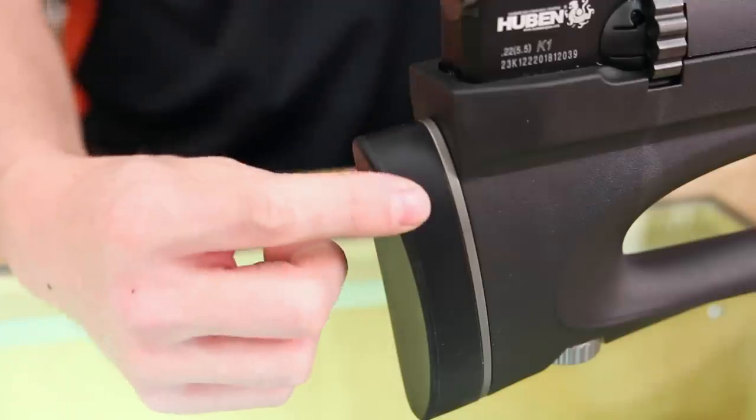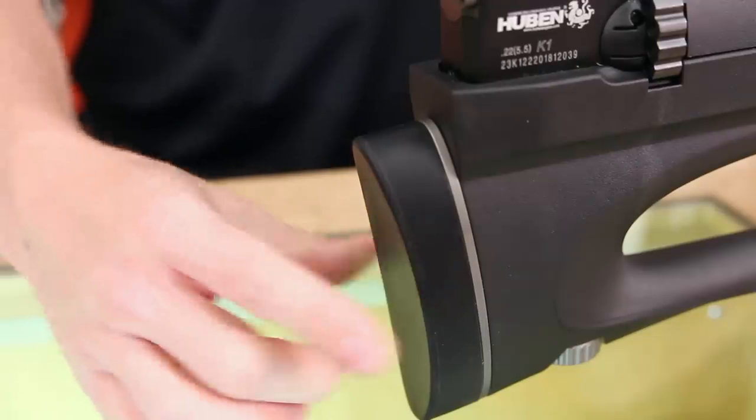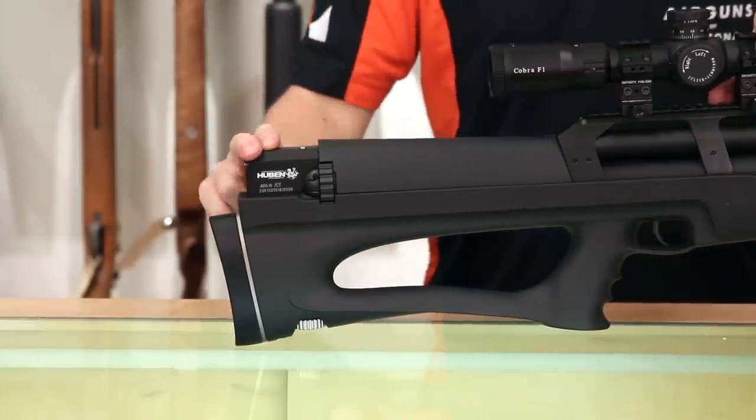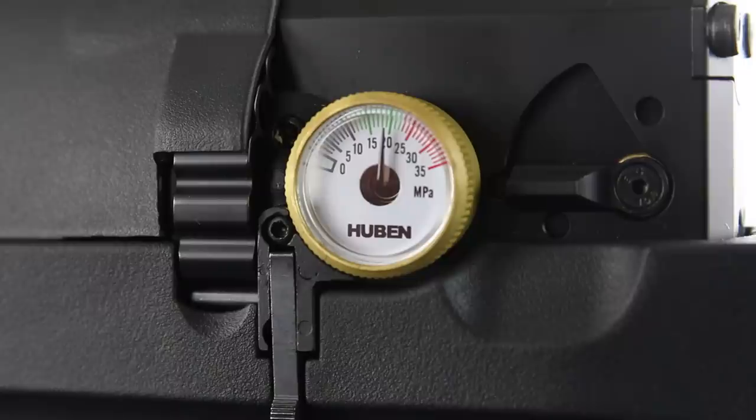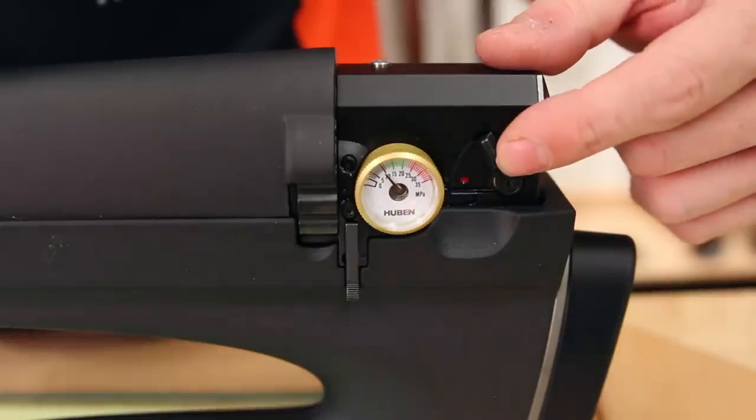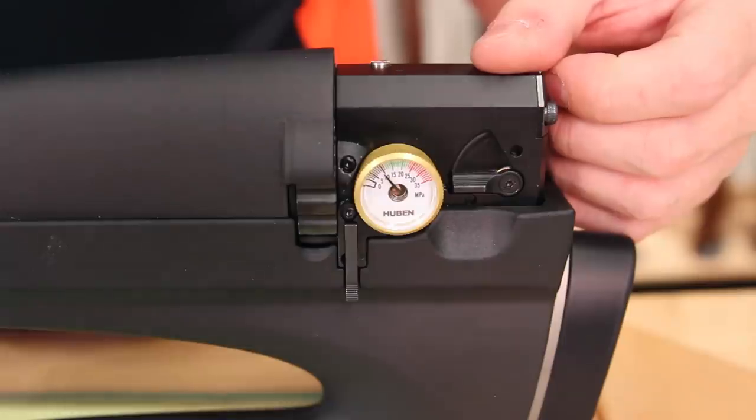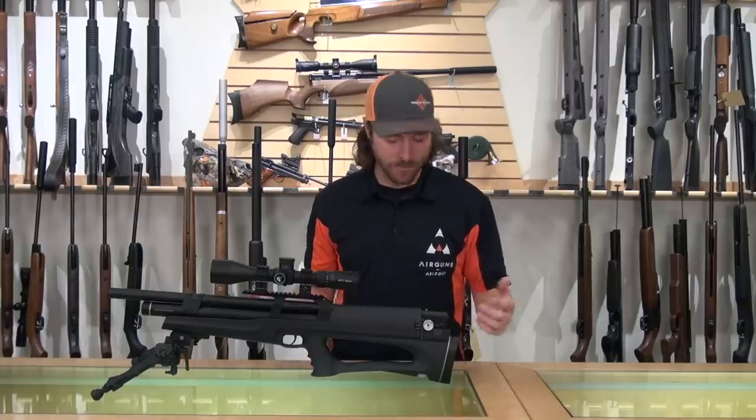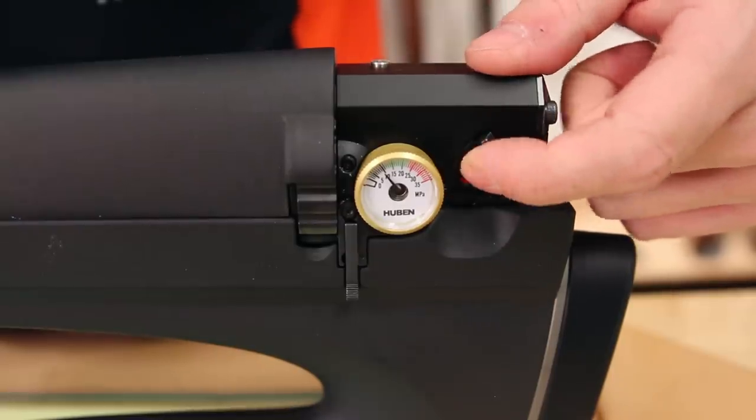At the back, you have a rubber butt pad on this gun. Going forward, you run right into the breach block here. This is the gauge that will tell you the regulator pressure. Right behind it, this is the manual safety. When you can't see the red dot, it's in safe. Pull the trigger, nothing will happen. Pull it up, now it is in fire mode and it will fire.